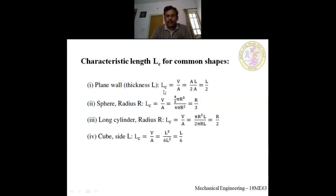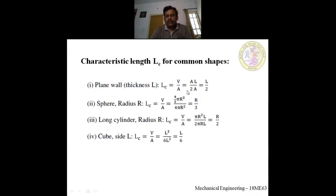The characteristic length is useful while solving numericals. Here I have shown characteristic lengths for some common shapes. For a plane wall of thickness L, the characteristic length is given by volume divided by area. Volume is area times thickness, and the total surface area is two times the face area.